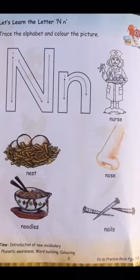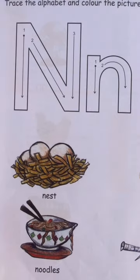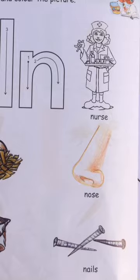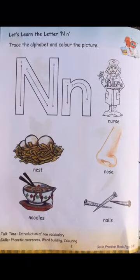So students, hum dubara se inhe padhenge: nurse, nest, nose, noodles, and nails. Aap sab bacche ek baar iski reading karein. N ki awaaz kya hai? N — nurse, nest, nose, noodles, and nails. In sab words ke start mein N ki awaaz aa rahi hai. So yeh jo sound hai, yeh N ki sound hai.